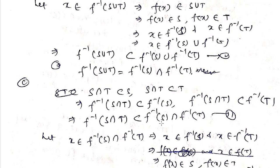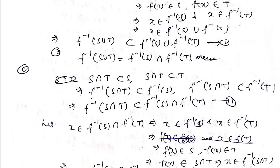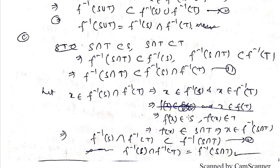For part (iii): S∩T ⊆ S and S∩T ⊆ T, so by (i) we get f⁻¹(S∩T) ⊆ f⁻¹(S) and f⁻¹(S∩T) ⊆ f⁻¹(T), hence f⁻¹(S∩T) ⊆ f⁻¹(S)∩f⁻¹(T). For the converse, let x belong to f⁻¹(S)∩f⁻¹(T); then f(x) belongs to S and f(x) belongs to T, so f(x) belongs to S∩T, hence x belongs to f⁻¹(S∩T). So equality holds. We stop here — if you have any queries, you can send me a mail as given on the first page. Thank you everyone.